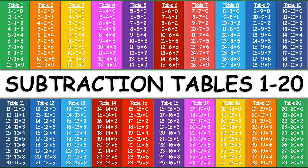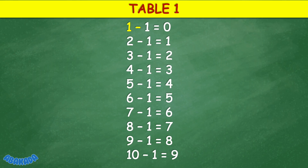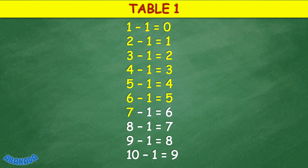Abacada Subtraction Tables 1 to 20. Table 1: 1 minus 1 equals 0, 2 minus 1 equals 1, 3 minus 1 equals 2, 4 minus 1 equals 3, 5 minus 1 equals 4, 6 minus 1 equals 5, 7 minus 1 equals 6, 8 minus 1 equals 7, 9 minus 1 equals 8, 10 minus 1 equals 9.